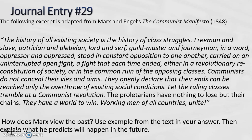The following excerpt is adapted from Marx and Engels' The Communist Manifesto, written in 1848: 'The history of all existing societies is the history of class struggles. Freeman and slave, patrician and plebeian, lord and serf, guildmaster and journeyman — oppressor and oppressed — stood in constant opposition to one another, carried on an uninterrupted open fight, a fight that each time ended either in a revolutionary reconstitution of society or in the common ruin of the opposing classes. Communists do not conceal their views and aims. They openly declare that their ends can be reached only by the overthrow of existing social conditions. Let the ruling classes tremble at a communist revolution. The proletarians have nothing to lose but their chains. They have a world to win. Working men of all countries, unite.'